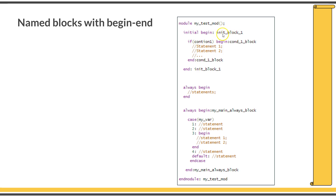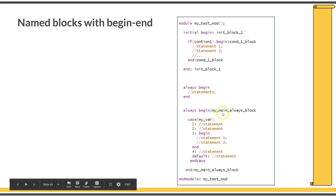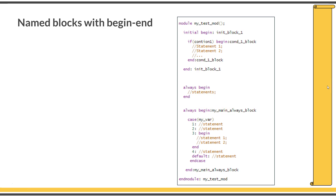The initial begin block is given the name initBlock1. When that block ends, the end keyword is used with the same name, initBlock1. In the same way, you can name an if-condition begin-end block as well — after the begin, give the colon and the name. You can also have unnamed always begin-end blocks or named ones with different names. You will see this kind of code especially when there are forking statements in testbench programming.